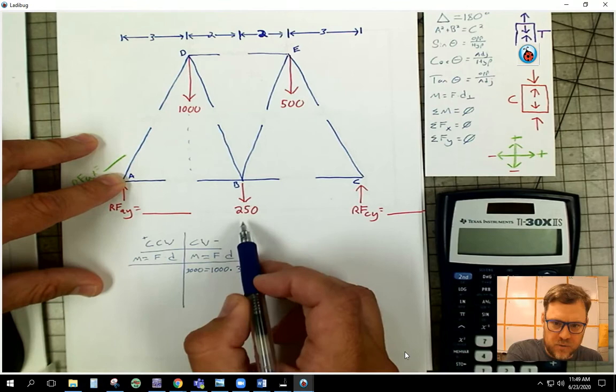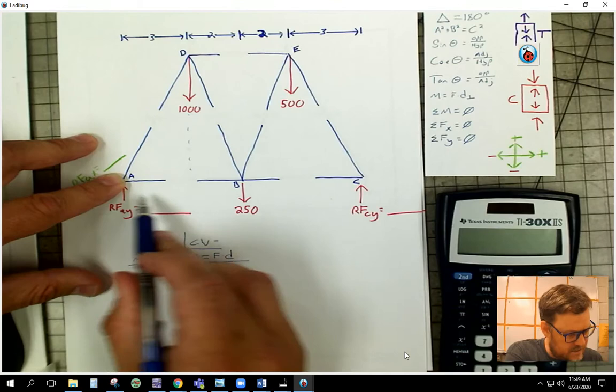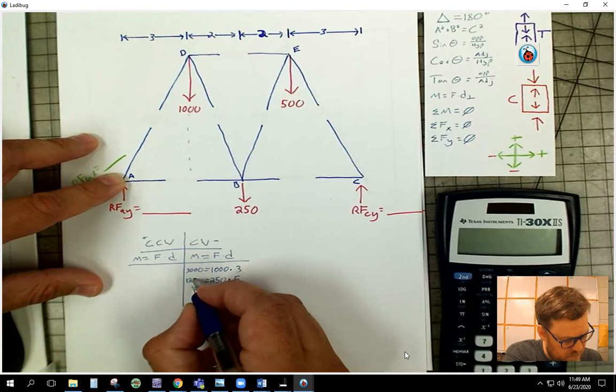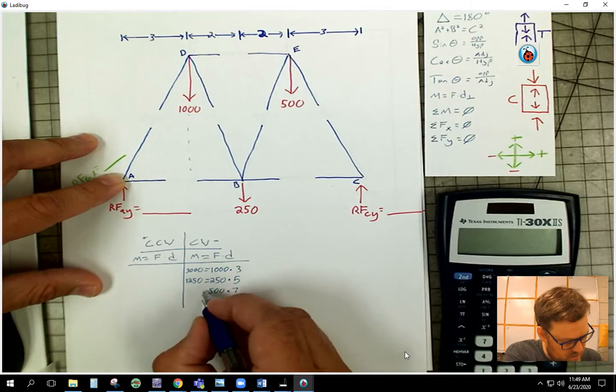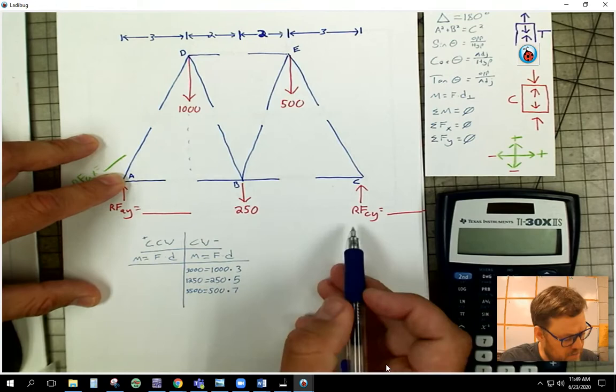Keep working my way that way. I've got one at 250, that force at B, and I look at that distance, that's five feet back to my pivot point, and that gives me 1250. Keep working my way across. I have 500, that line of action is seven feet, so I have 500 times seven, that should give me 3500.